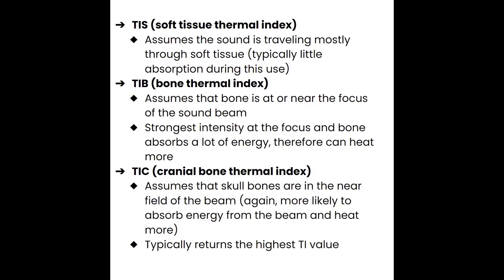So as we were looking at those numbers, you may have noticed the TIS, TIB, and TIC. Those are all referring to different ways to expressing the thermal index. It's going to be more sensitive to changes that occur when the sound is interacting with different types of tissue. TIS is the thermal index as the sound is interacting with soft tissue. So if you're doing a thyroid, an abdomen, a first trimester ultrasound, we're looking more at the TIS.